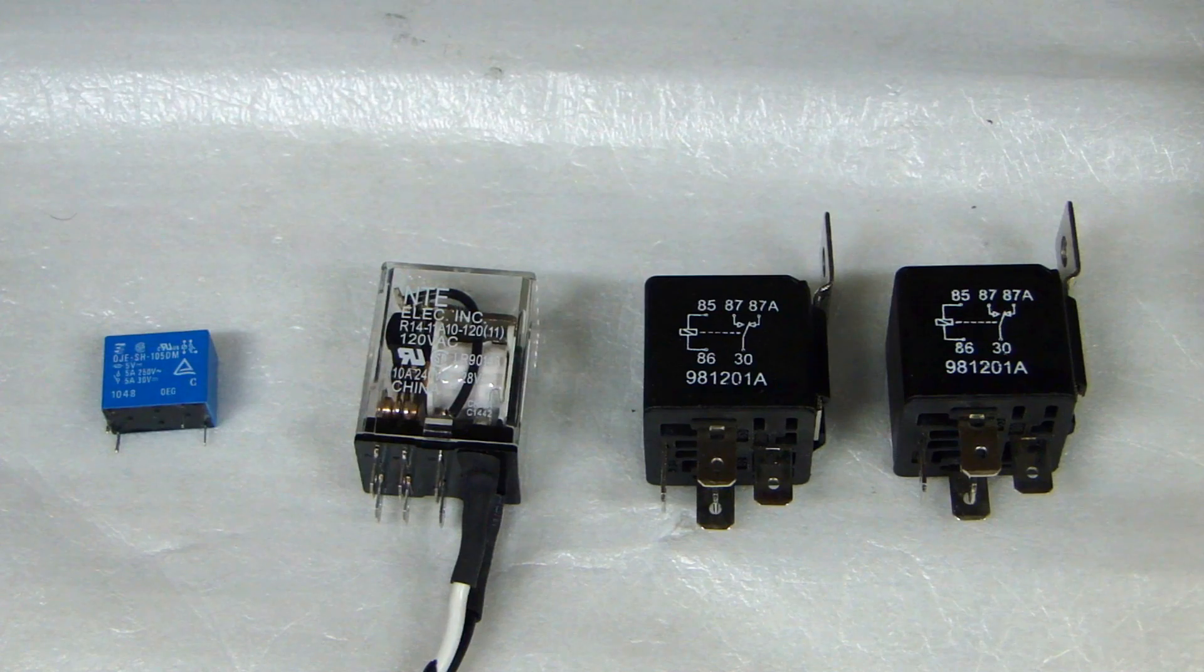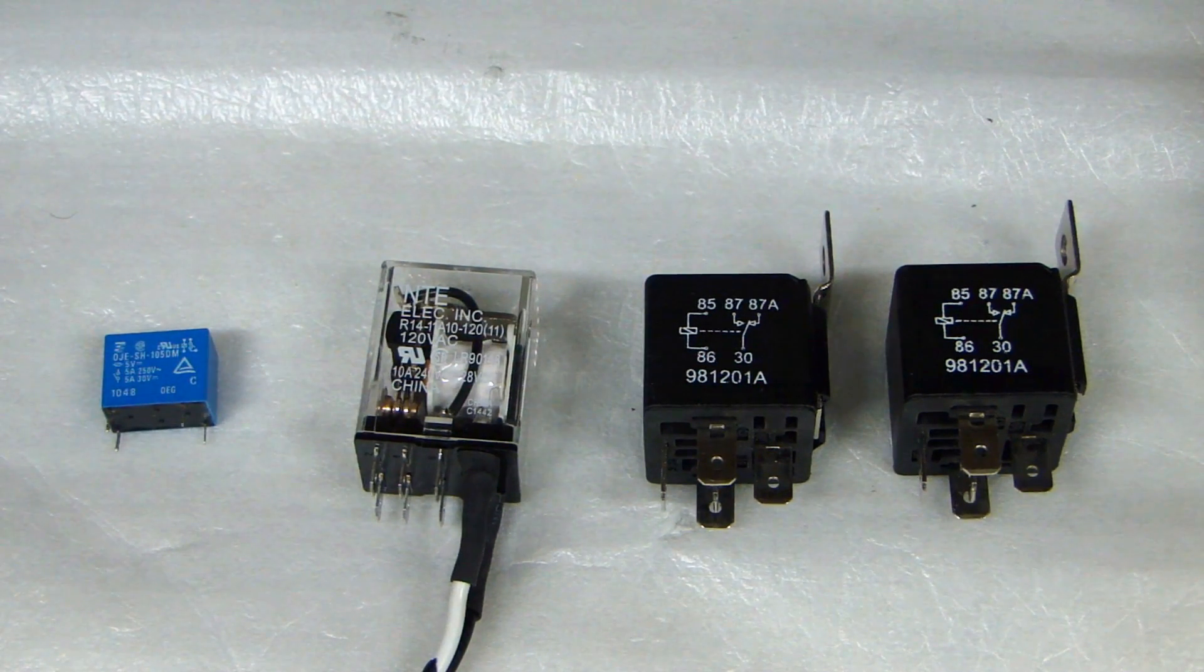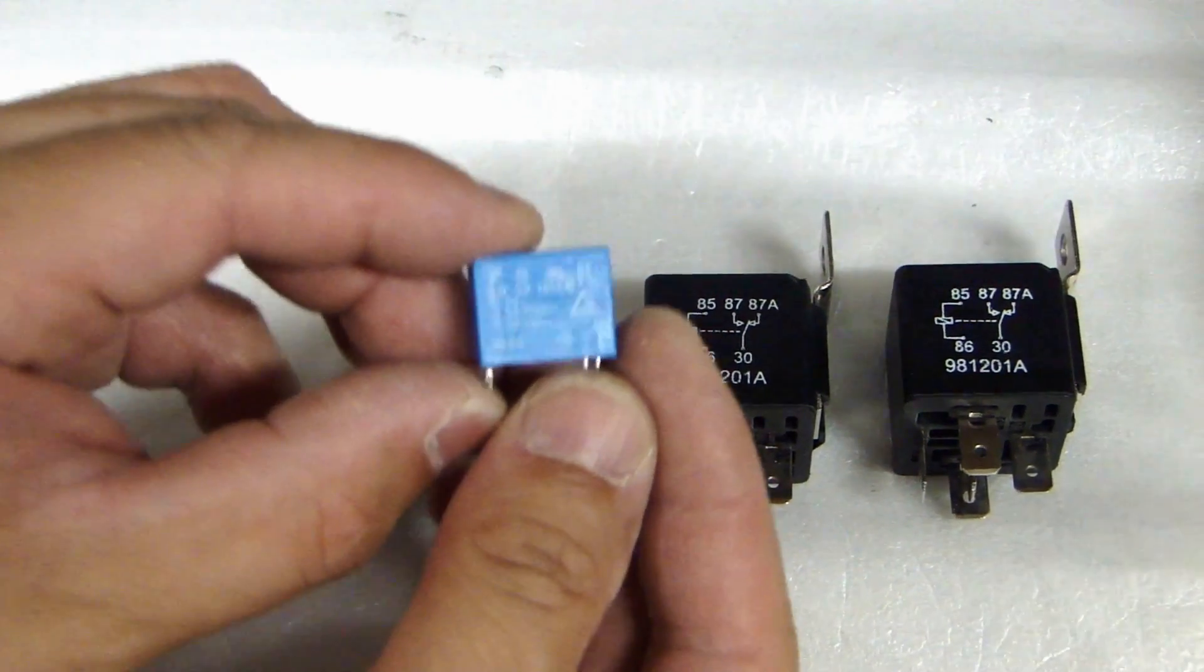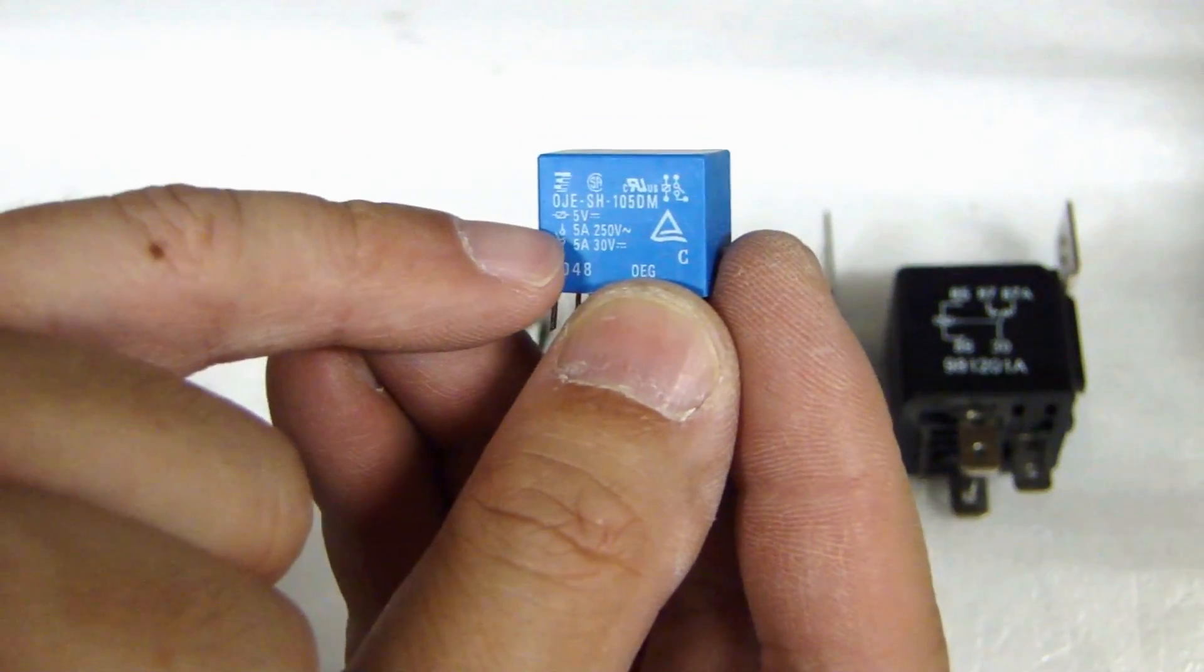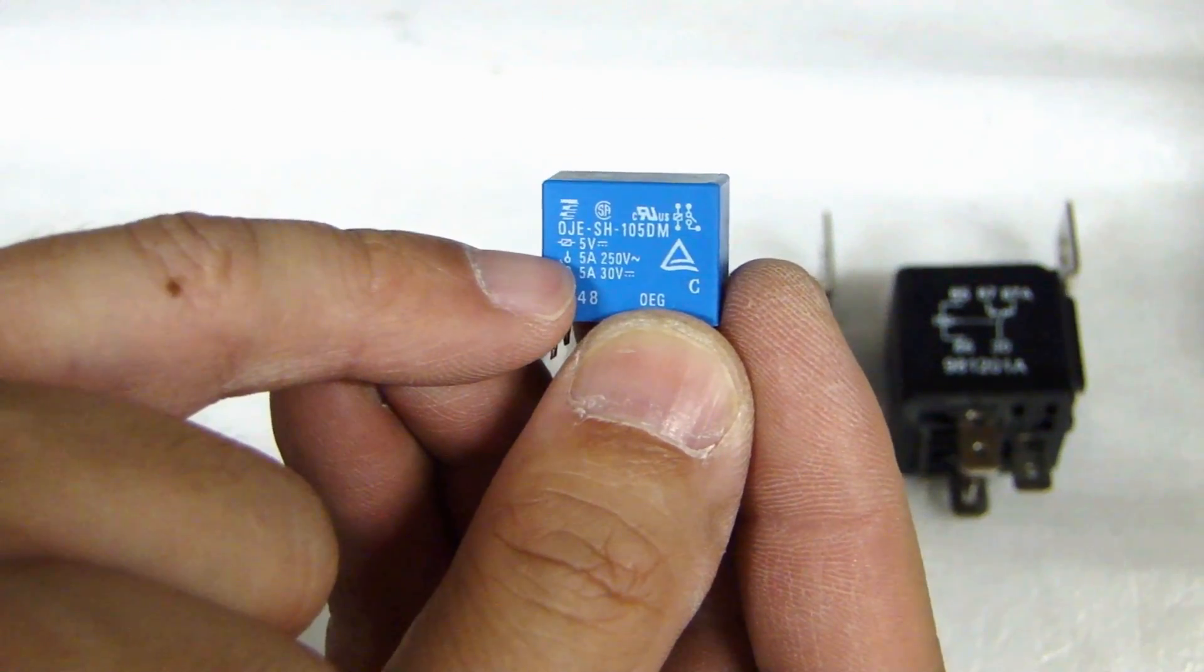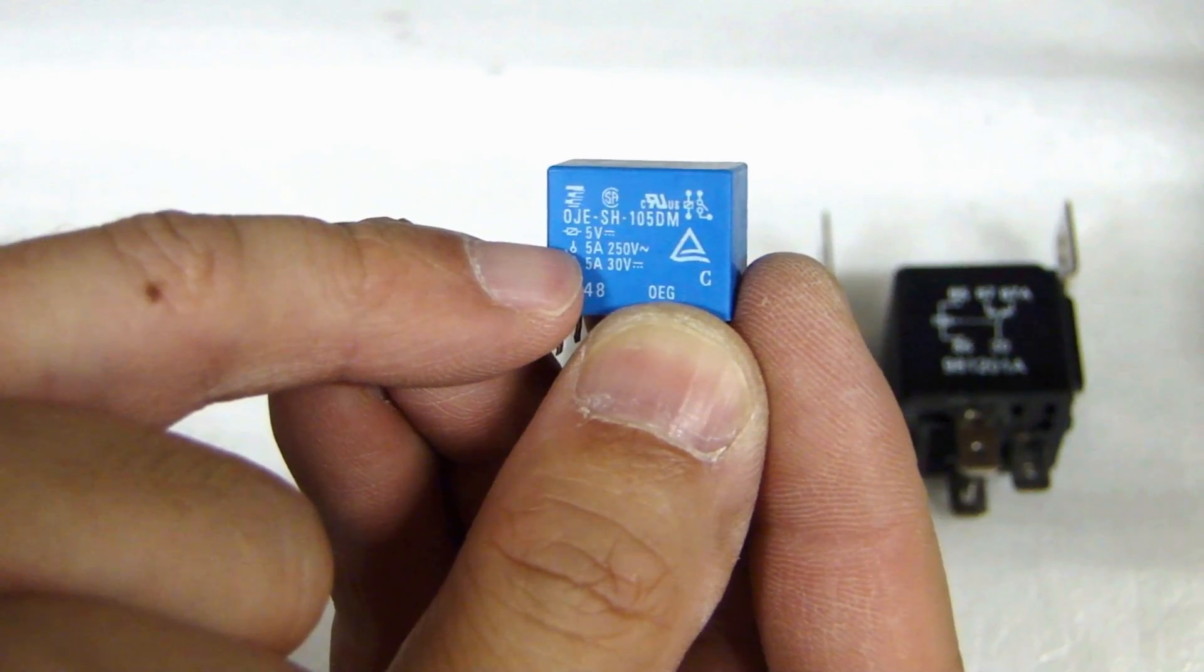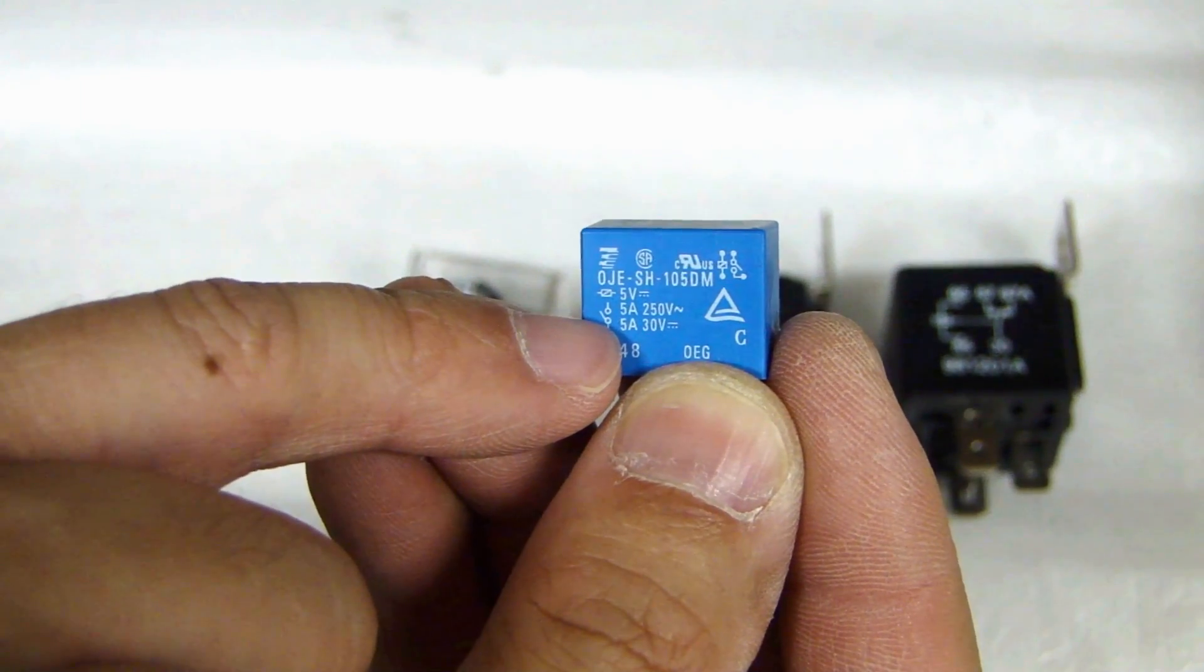The next thing you want to pay attention to is the rating of the switch. Inside the relay there are contacts that open and close and it can handle only certain amount of current and voltage. For example if you look at this little one here the print is kind of small but it tells you the contacts inside is rated for 5 amp at 250 volt AC, below that is 5 amp at 30 volt DC.